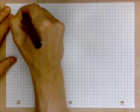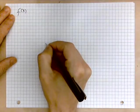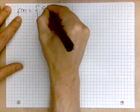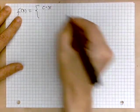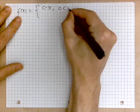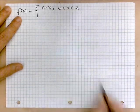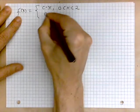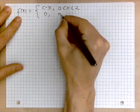Here's our function f of x is given by c times x for say between 0 and 2. So x is between 0 and 2. This is the function definition and it's 0 otherwise.